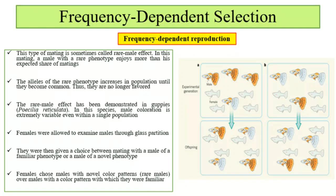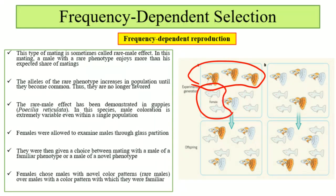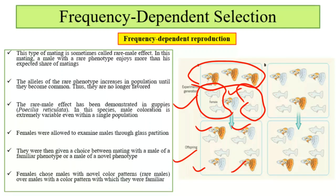In this way, frequency-dependent reproduction plays a role in maintaining genetic diversity. In the figure, you can see orange-tailed males and females. These show an experimental generation and offspring. After reproduction, you can see the phenotype of the offspring generation. With successive generations, a rare phenotype becomes common, and if there is an alternative phenotype that is favored, the cycle continues.